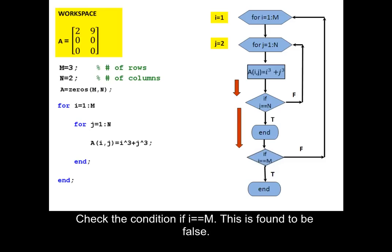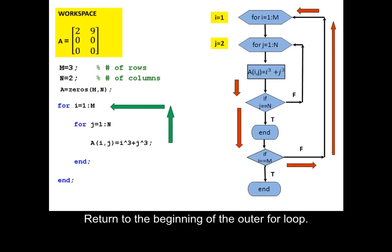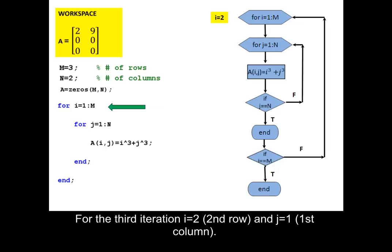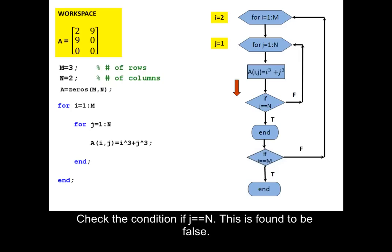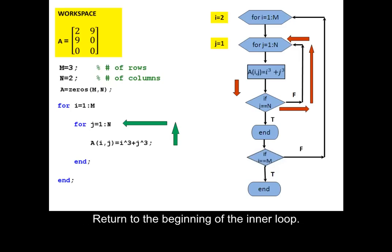Check the condition: if I is equal to M, this is found to be false. Return to the beginning of the outer for loop. For the third iteration I equals 2, second row, and J equals 1, first column. Compute the element in the second row, first column of matrix A, position (2,1), as 2 cubed plus 1 cubed equals 9. Check the condition: if J is equal to N, this is found to be false. Return to the beginning of the inner loop.